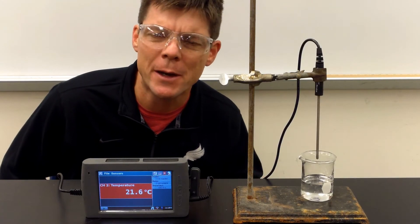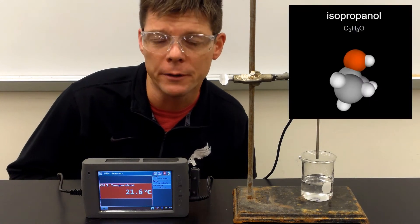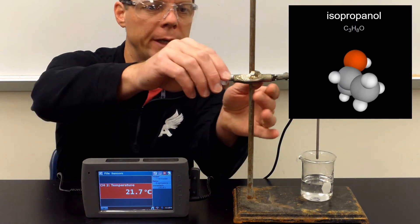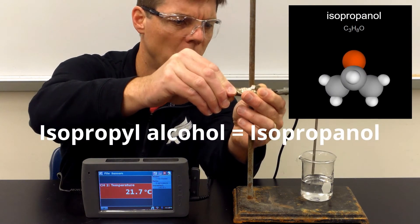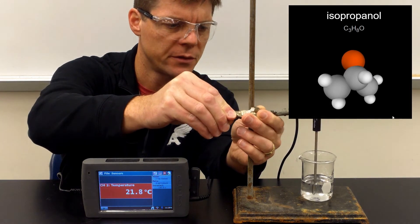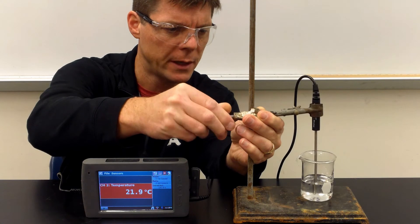Alright, so we saw the amount of evaporative cooling that took place with water. Let's look at the alcohol. I'll go ahead and lower the probe back into the liquid here. Again, this is 70% isopropyl alcohol, 70% rubbing alcohol. So just lower the probe in there like that.